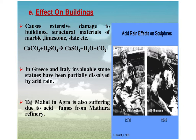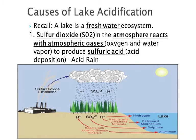In Greece and Italy, invaluable stone statues have been partially dissolved by acid rain. The Taj Mahal in Agra is also suffering due to acid fumes from the Mathura refineries. Acid rain can also cause lake acidification: sulfur dioxide reacts with oxygen and water to produce sulfuric acid, which is deposited as acid rain and results in the acidification of freshwater lake ecosystems.